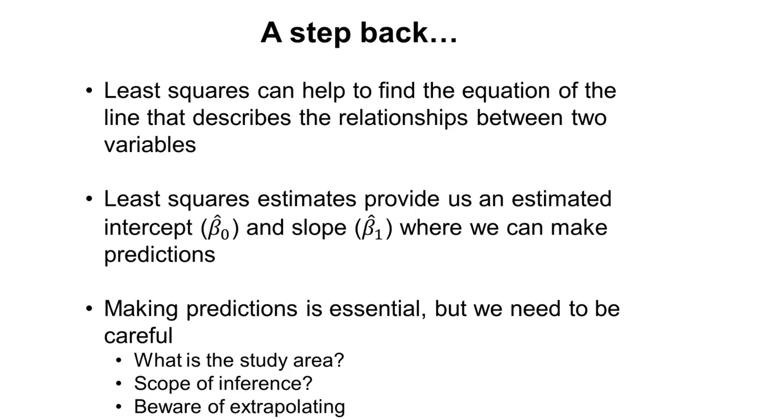And these least squares estimates are going to provide us an estimated intercept, what we call beta 0 hat, and a slope, what we call beta 1 hat. If we know what these values are, we can then begin to make predictions using our regression equations.